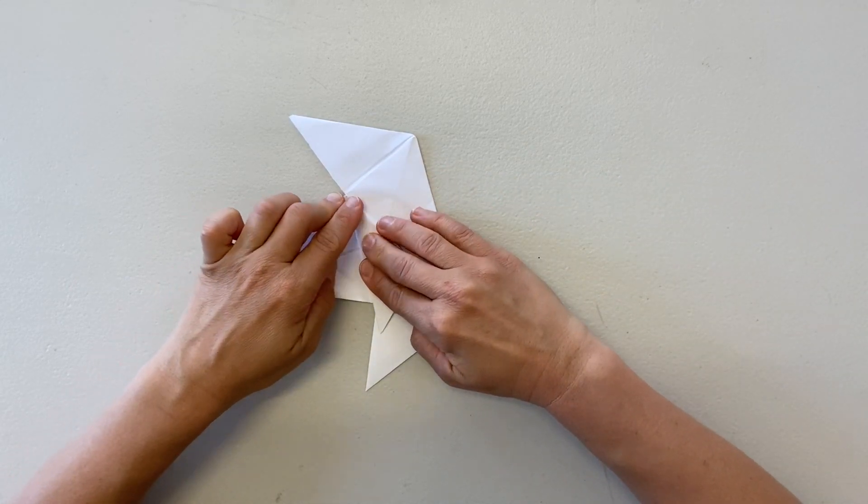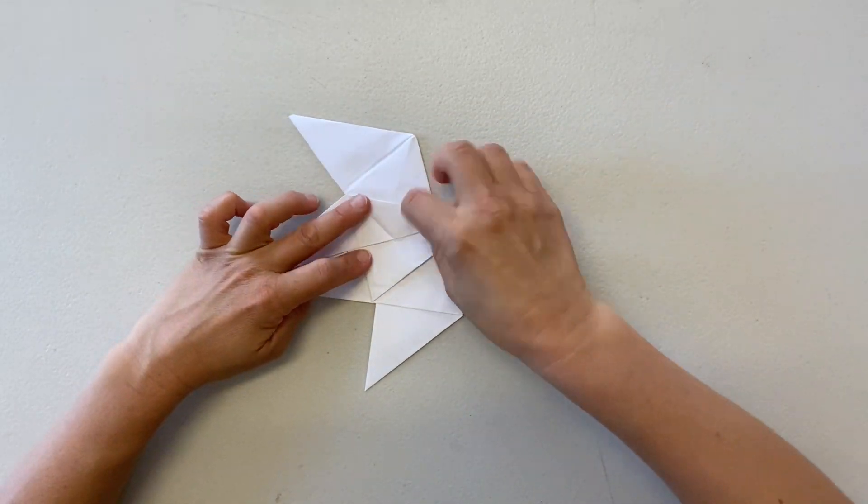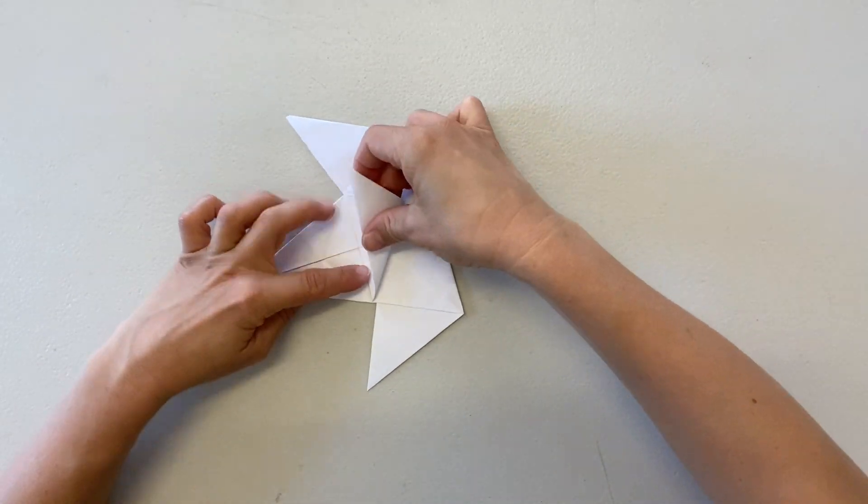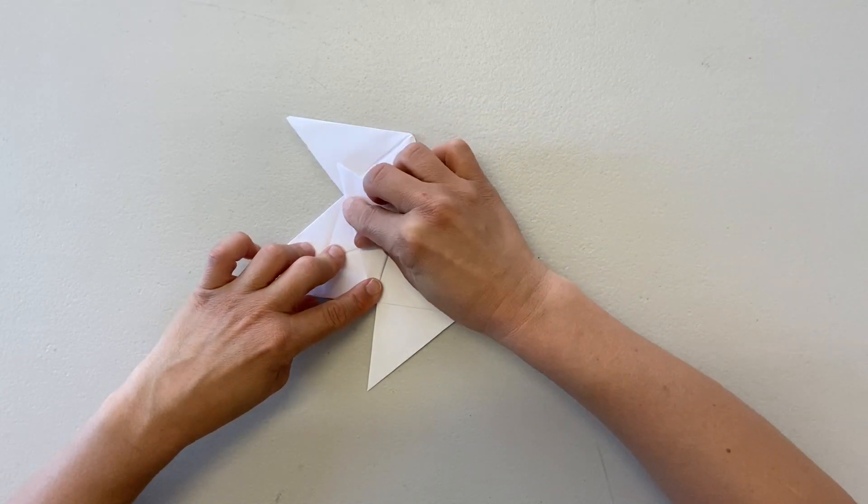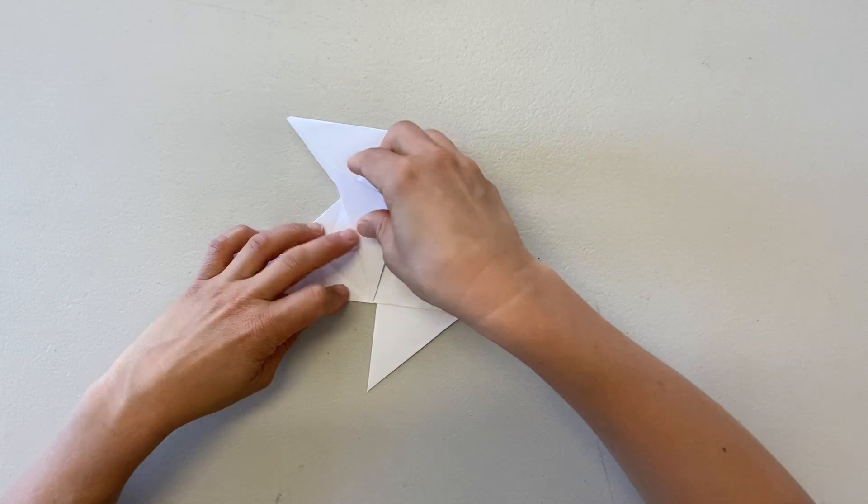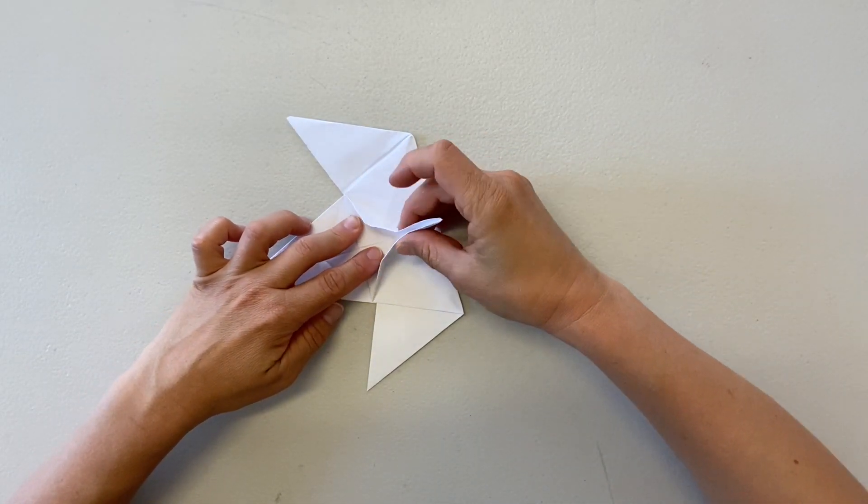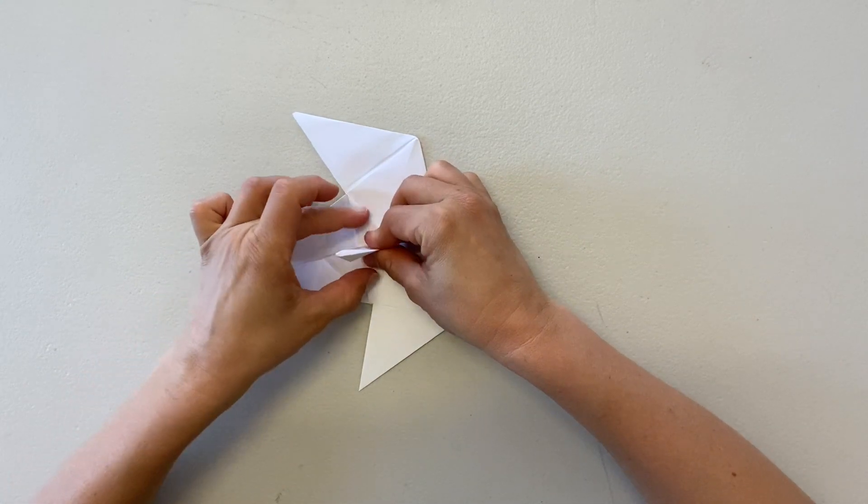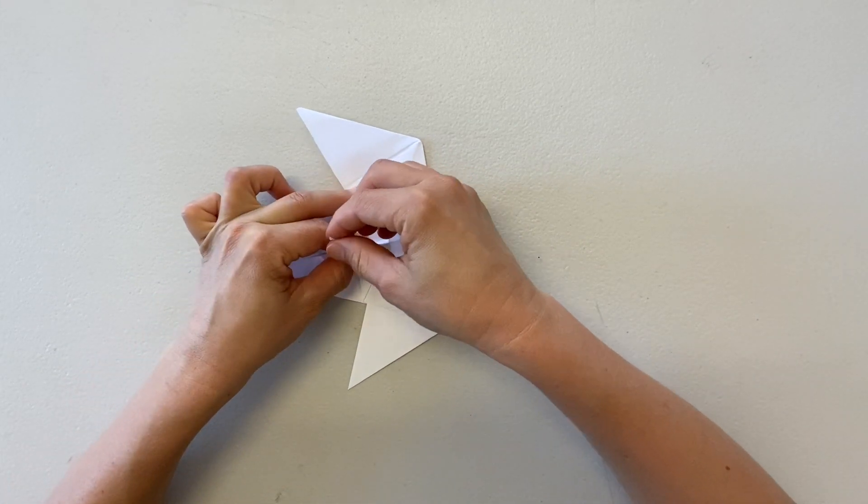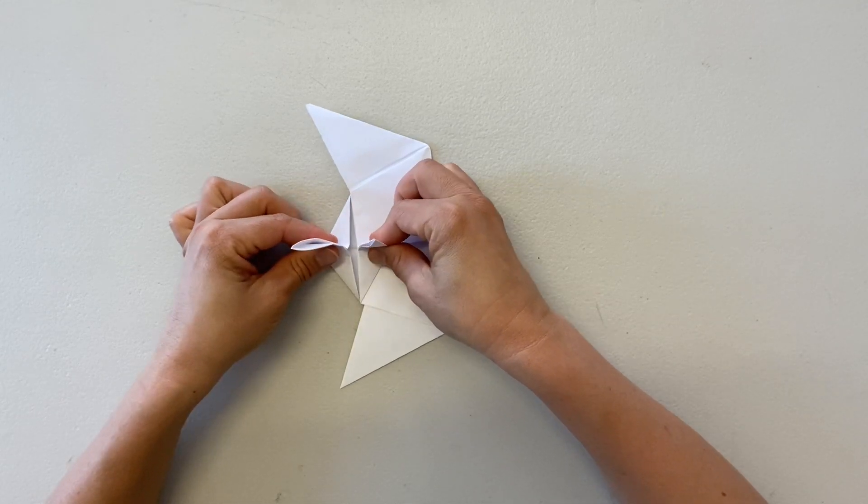Now we'll do our rabbit ear fold on the other side. Again, only creasing halfway. Pinch these two sides together and do the same with the other side. And you have a beak.